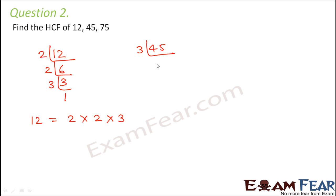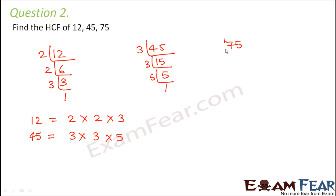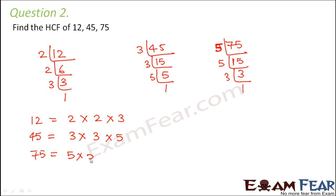Let's do it for 45. So 45 can be written as 3 into 3 into 5. The third number is 75, which can be written as 5 into 5 into 3.